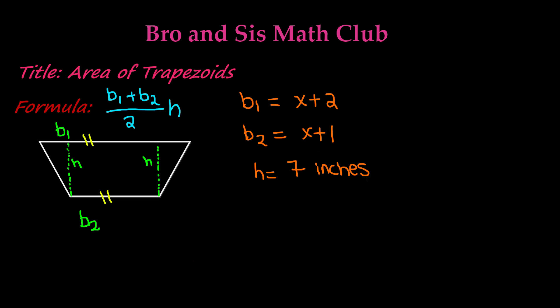So in order to find our area of this trapezoid, we need to add the base 1 and base 2, and then divide it by 2, and then multiply it by the height. But what is the value of x? So let's say that the given value of x is 6.